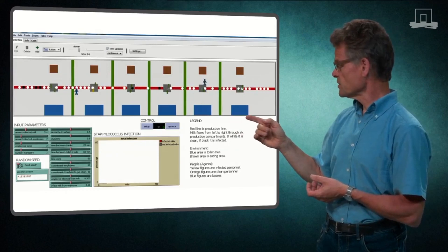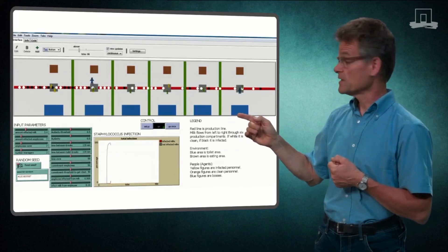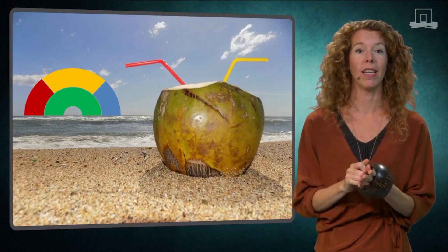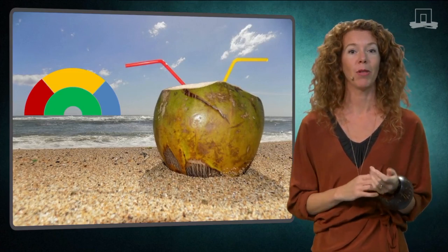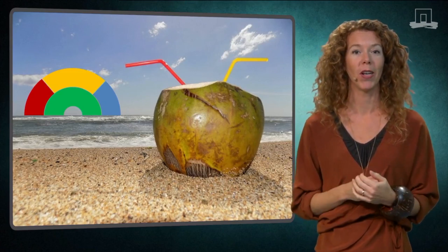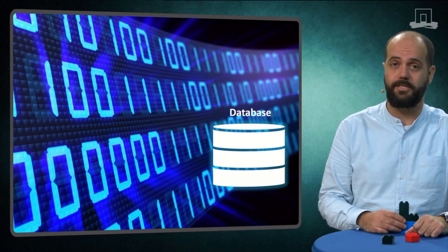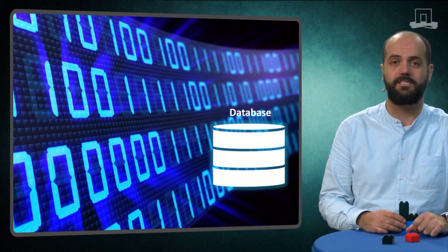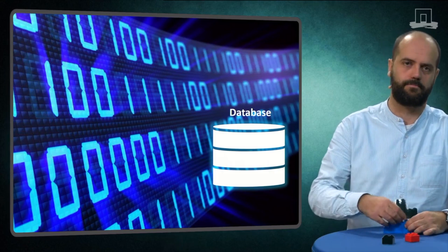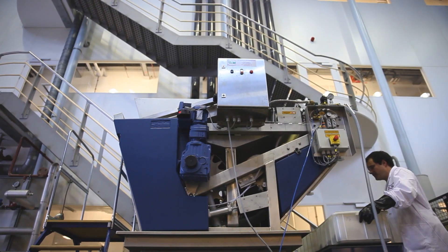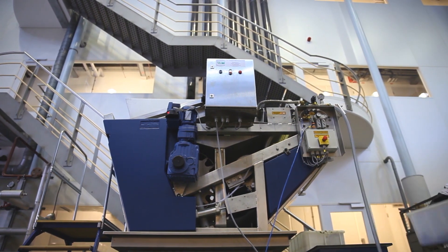The MOOC Circular Economy is one of the six courses of the MicroMasters Bio-Based Sciences for Sustainability, that together provide you with a deeper learning experience in the bio-based field and a credit-backed pathway into a Master of Science degree. You are free to explore this course as a standalone course as well.